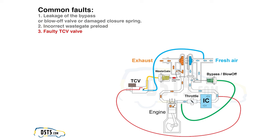If the wastegate preload is set correctly but the TCV valve isn't working properly, the wastegate may open when it shouldn't, reducing engine performance. Conversely, if the wastegate doesn't open when needed, the turbocharger may overspin, or in a better scenario, trigger an error message about high boost pressure. The TCV valve controls the amount of gas passing through the exhaust turbine, directly affecting its RPMs and the RPMs of the compressor turbine, and thus the total pressure created in the compressor part.